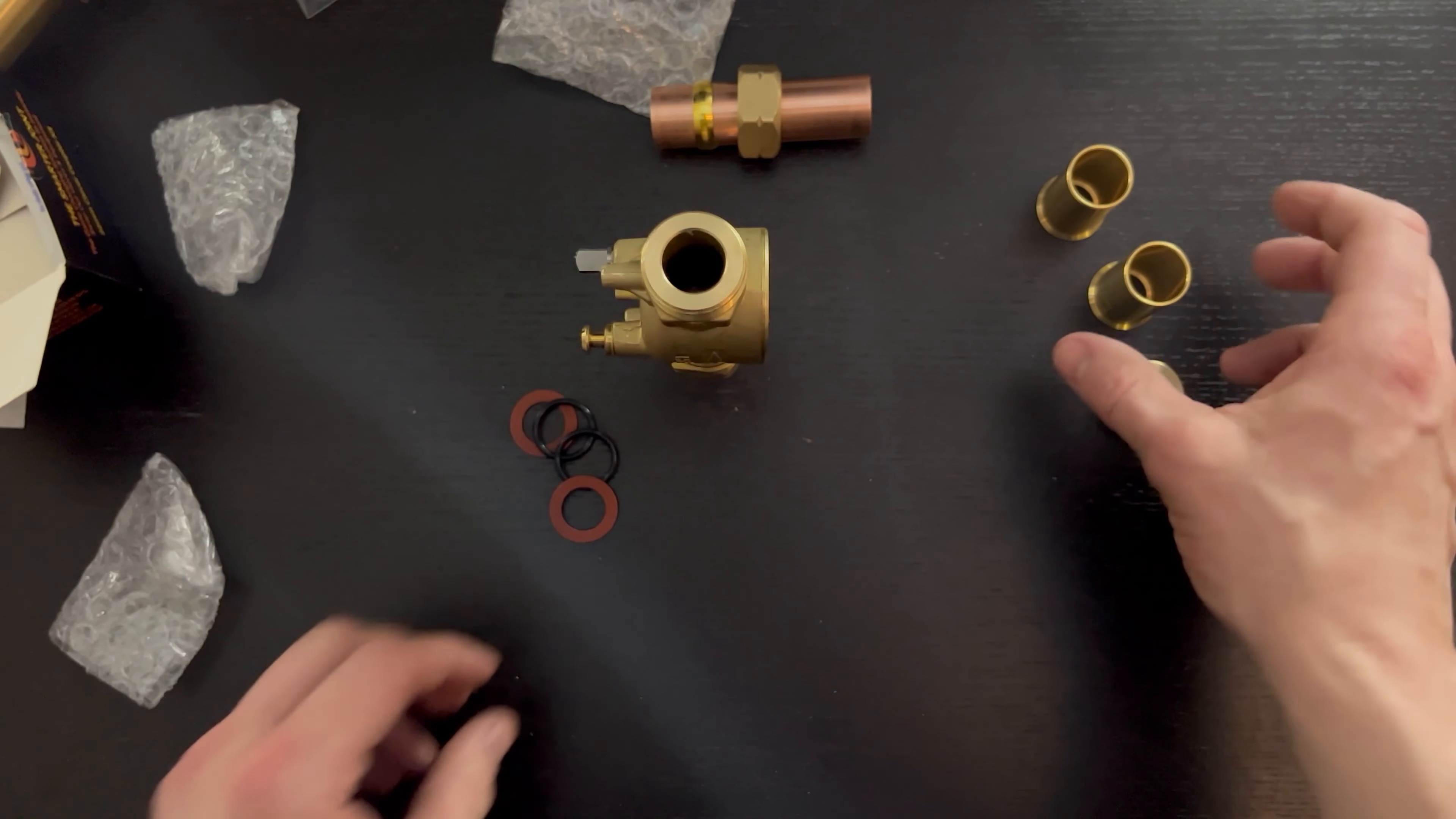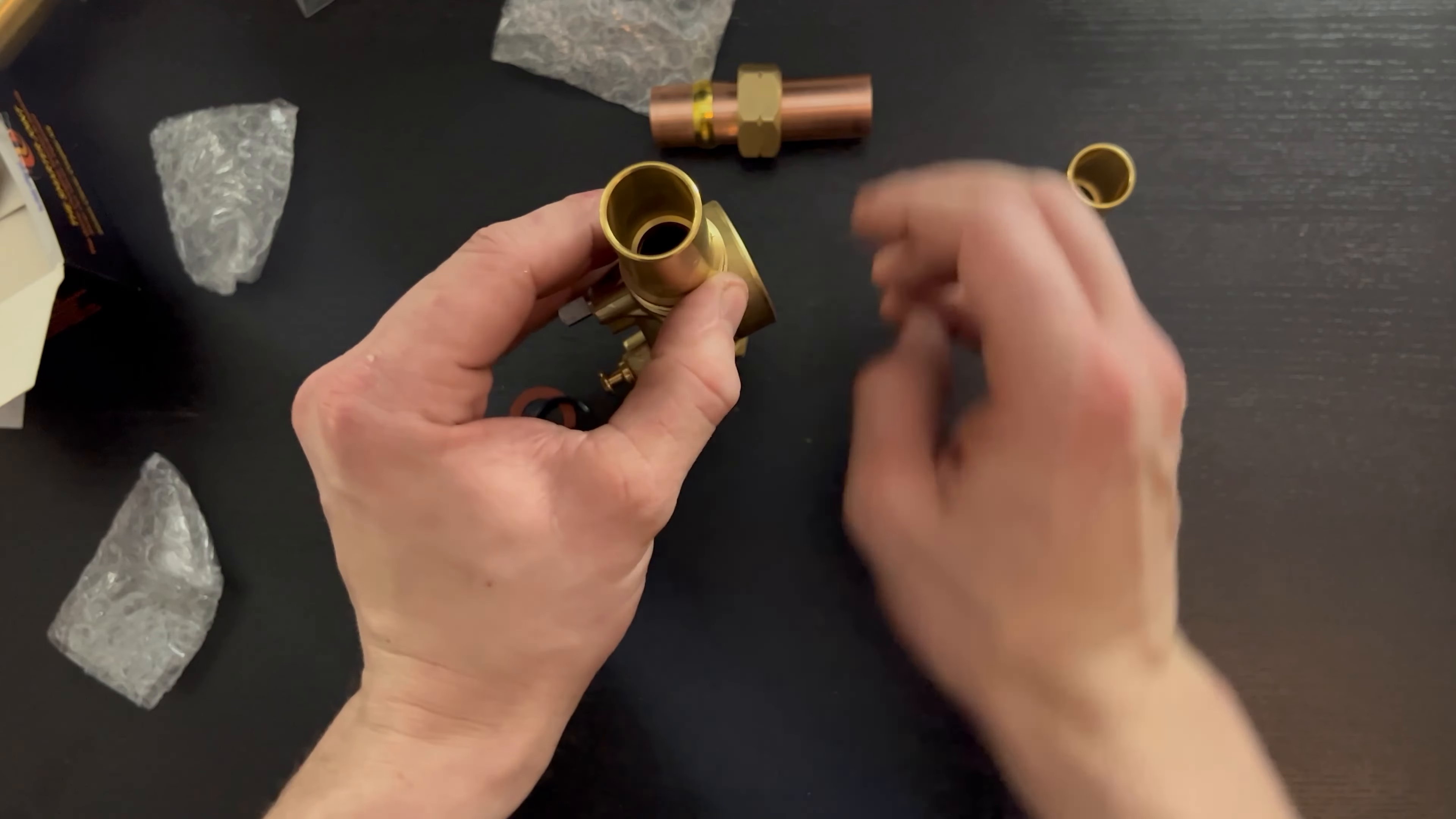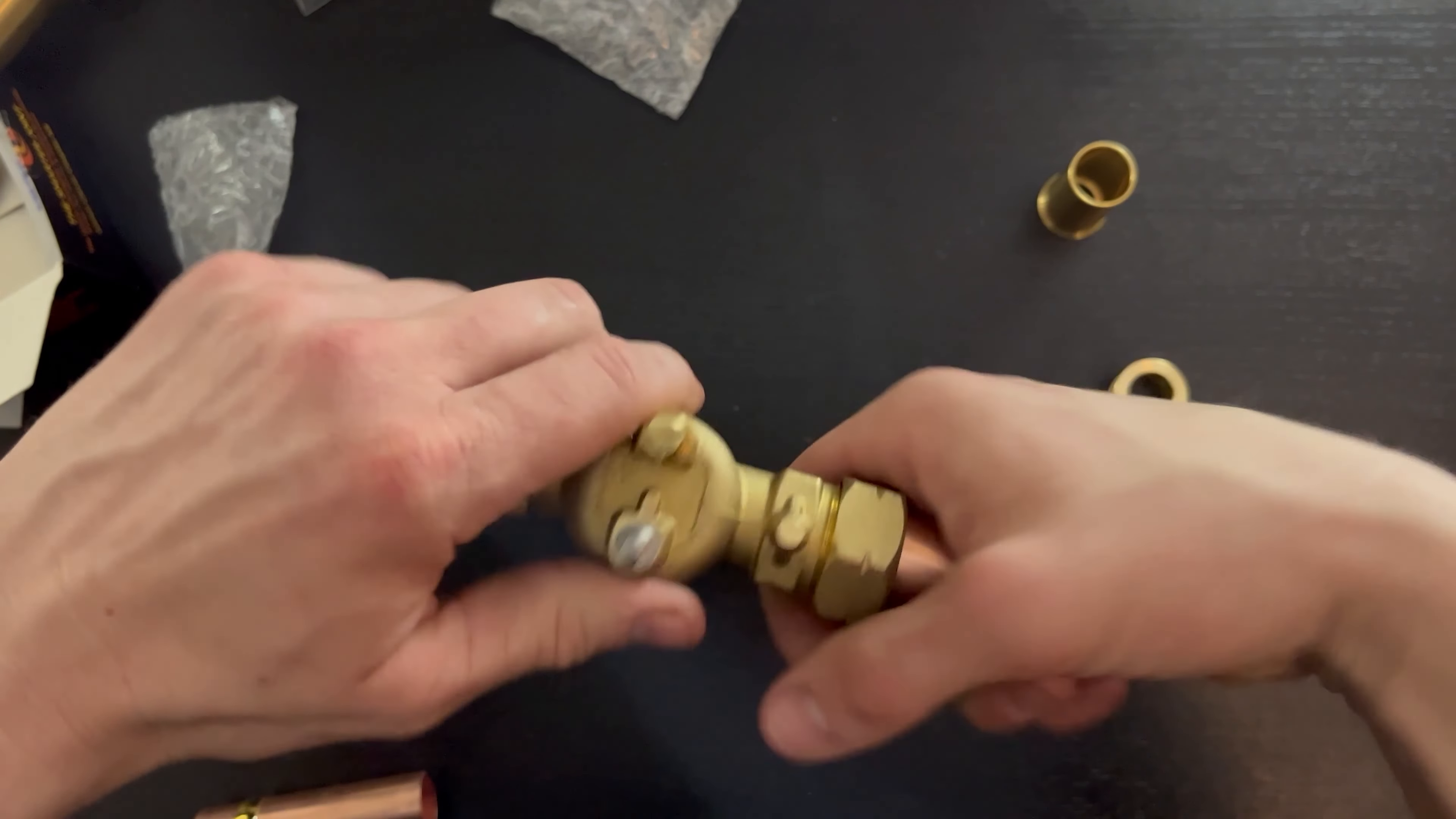After you've put your insert adapter in, take one of your fibre washers, take one of your stub adapters and then get the nut that came with the valve, slide it over and tighten. Repeat for the other end.